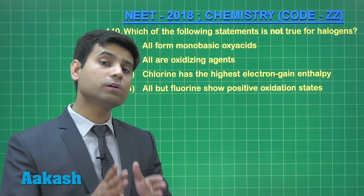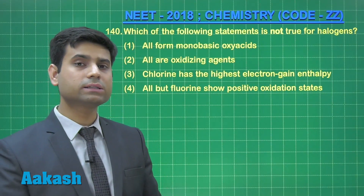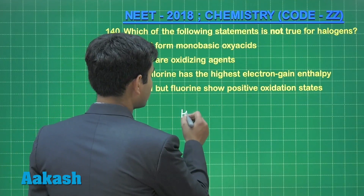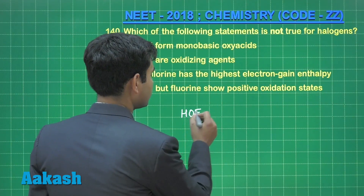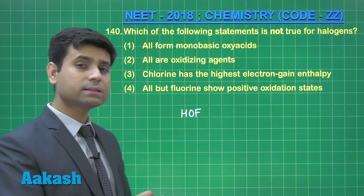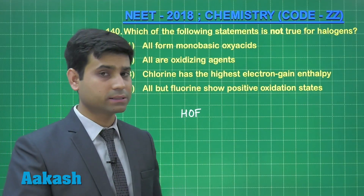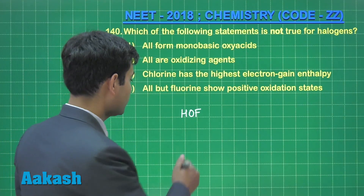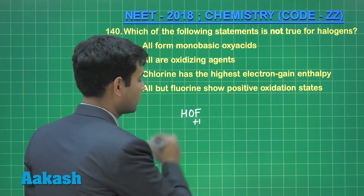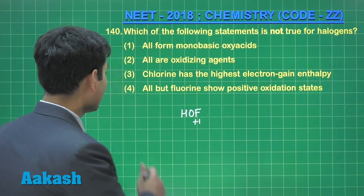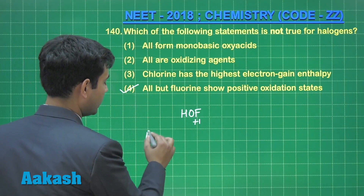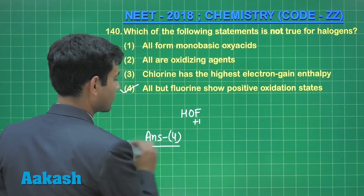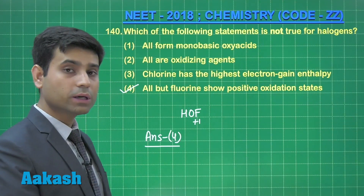Now, option 4 states all but fluorine show a positive oxidation state. However, fluorine also shows a positive oxidation state, but only in the compound HOF, which exists at very low temperature. In HOF, the oxidation state of fluorine is +1. Therefore, the fourth option is not correct, and the answer for this question is option 4.